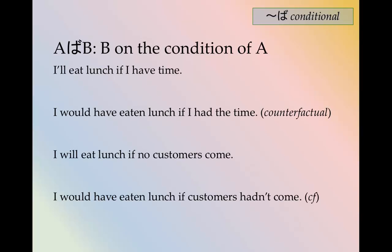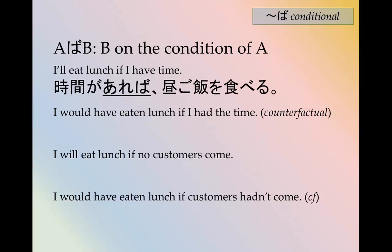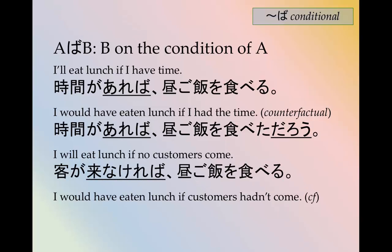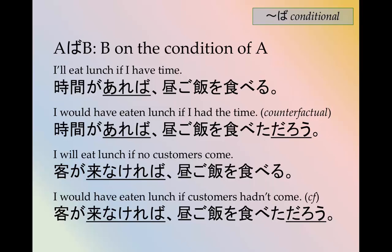Let's look at the difference based on tense. 時間があれば、昼ご飯を食べる — I will eat lunch if I have time. Counterfactual puts だろう at the end: 時間があれば、昼ご飯を食べただろう — I would have eaten lunch if I had the time. For the negative: お客さんが来なければ、昼ご飯を食べる — I will eat lunch if no customers come. In the past tense it's counterfactual: お客さんが来なければ、昼ご飯を食べただろう.